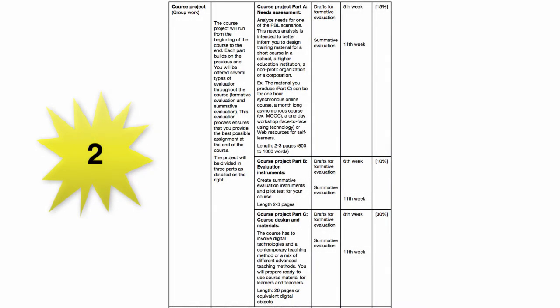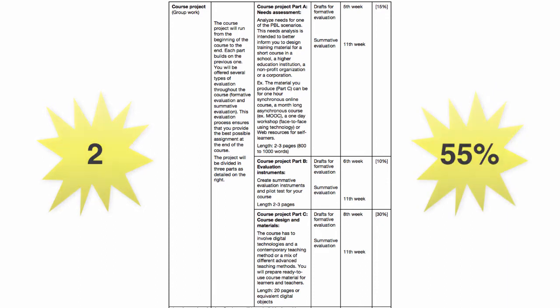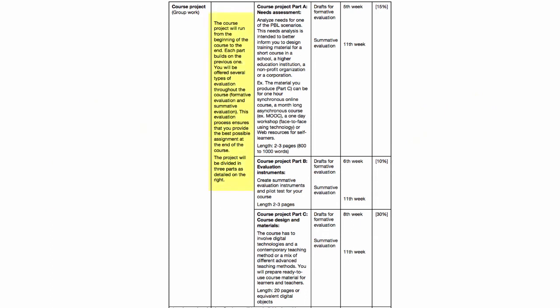The second assignment is the course project and this assignment is worth 55% of your grade. The course project will run from the beginning of the course until the end — each part builds on the previous one. You will be offered two types of evaluation throughout the course: formative evaluation and summative evaluation. This evaluation process ensures that you provide the best possible assignment at the end of the course.